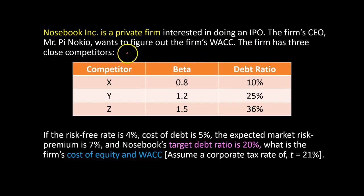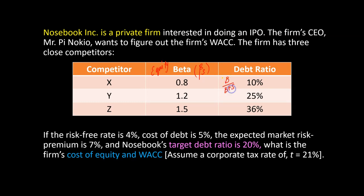We are told that the firm has three close competitors: firm X, firm Y, and firm Z. We are given information on the equity betas — the riskiness of each competitor's stock, denoted beta S — for all three. Firm X has a debt ratio of 10%, meaning debt as a fraction of total assets (B plus S) equals 10%. It's 25% for firm Y and 36% for firm Z.